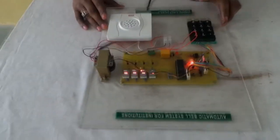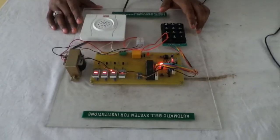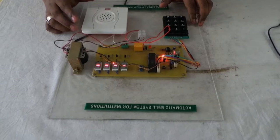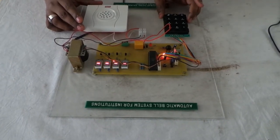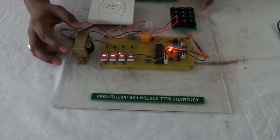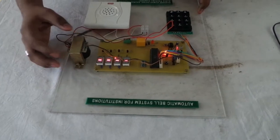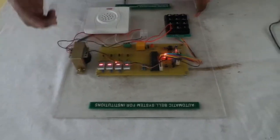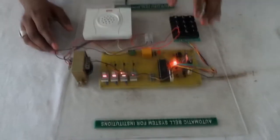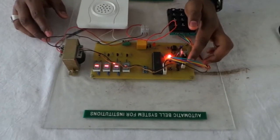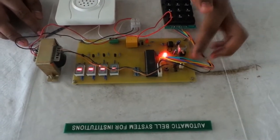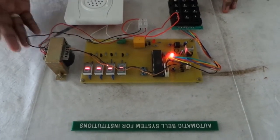This is a project of Automatic Bell System for Intrusion. We have used a bell and a keypad. This is a 220V transformer which converts the voltage to the bell to AC. We have used a relay, which is 12V AC to DC.